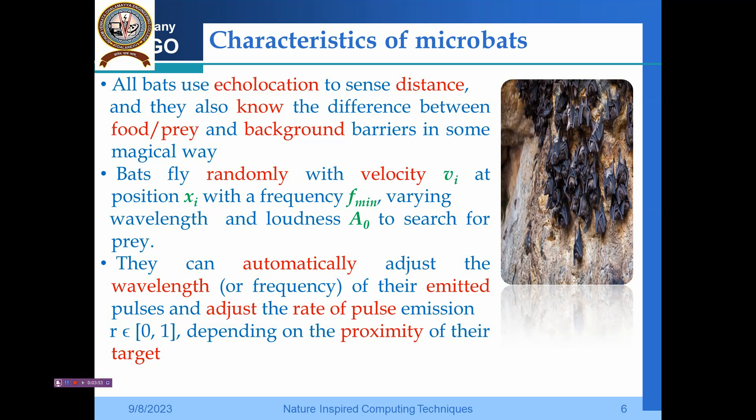The bats fly randomly with velocity v_i (i=1 to n) and with position x_i with a frequency f_min to f_max. We have a varying wavelength here because when there is a difference of frequency, this we call the wavelength, and the loudness A_0 to search the prey.